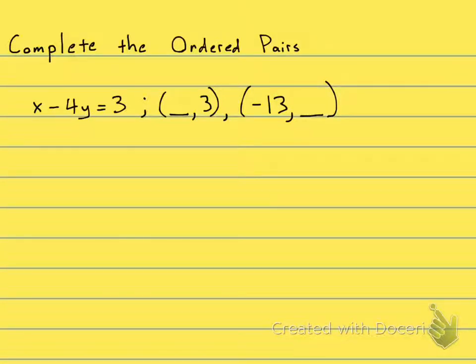Complete the ordered pairs. They give us two ordered pairs: the first one and the second one. They want us to complete it. In this first ordered pair they're giving me the Y but they're not giving me the X. I need to find the X and the way I'm going to do that...